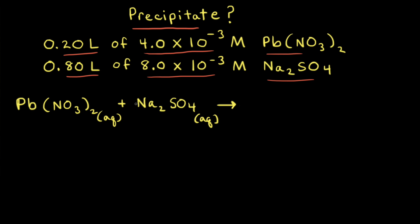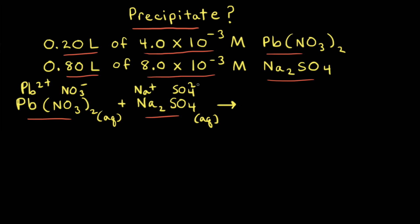The first step is to figure out the identity of the precipitate that might form. We're mixing an aqueous solution of lead two nitrate with an aqueous solution of sodium sulfate. In the lead two nitrate solution, there are lead two plus cations and nitrate anions. In the sodium sulfate aqueous solution, there are sodium cations and sulfate anions. So one possible product would be lead sulfate.